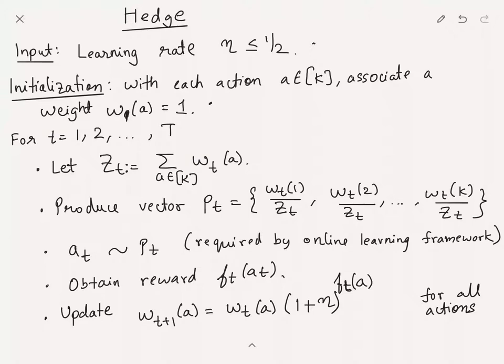In each time step t, we consider a normalizing factor zt, which is just the sum of all weights, and then convert these weights to a distribution. The coordinate i is going to be wt(i) divided by the normalization factor zt. You're just going to change these weights to a distribution. Recall in the online learning framework, the algorithm's goal is to produce a distribution. Here pt will be the distribution that the algorithm produces, and as required by the online learning framework, we'll sample an action at corresponding to this distribution pt.